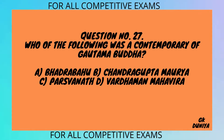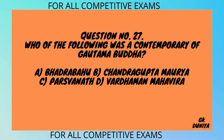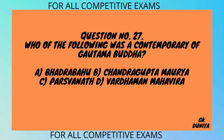Question No. 27. Who of the following was a contemporary of Gautama Buddha? A. Bhadrabahu, B. Chandragupta Maurya, C. Parshvanath, D. Vardhaman Mahavira.